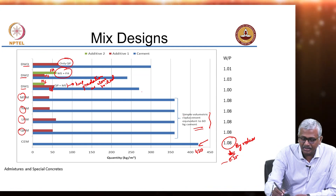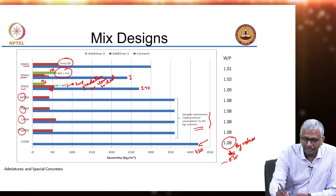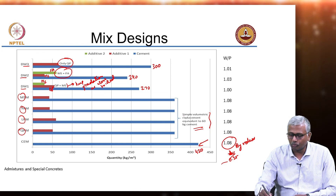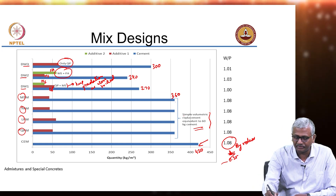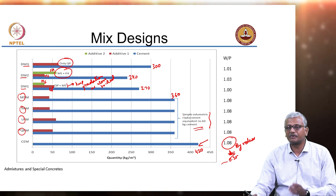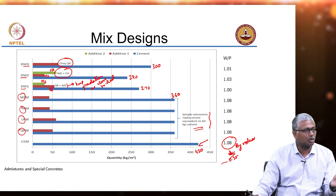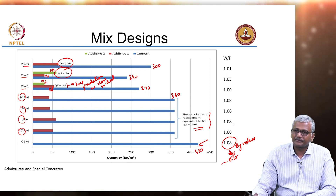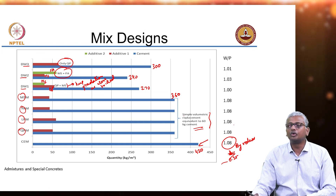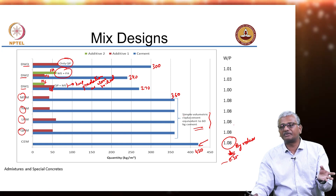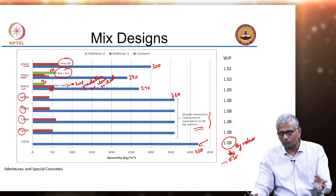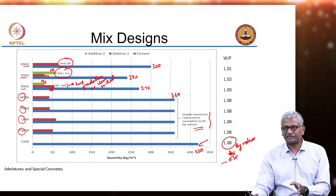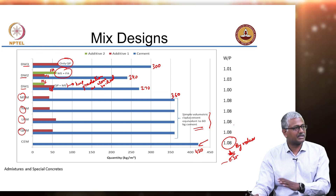The cement content in the design mixes is only 270, 240, and 300 kilograms per cubic meter respectively, compared to 420 in the control mix. In all the volumetric replacement mixes, the cement content is 360 kilograms, because we removed 60 kg of cement and replaced it with an equivalent volume of mineral additive. The water-to-powder ratio is more or less in the same range because it is presented by volume; when compared using the densities of the cementitious phases, they work out to the same water-to-binder ratio by mass.